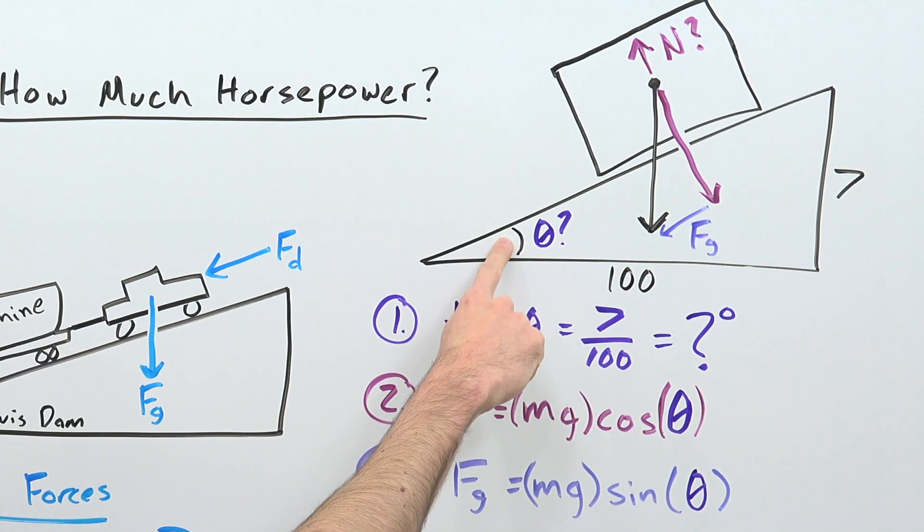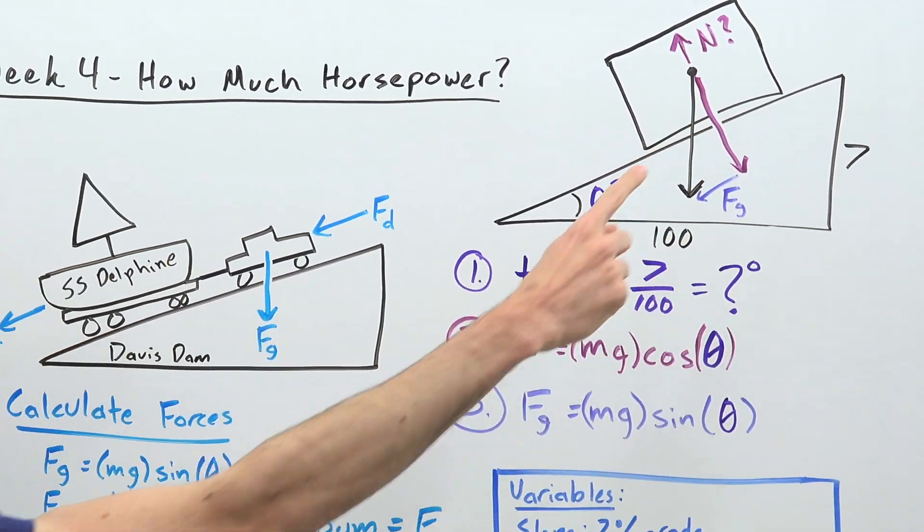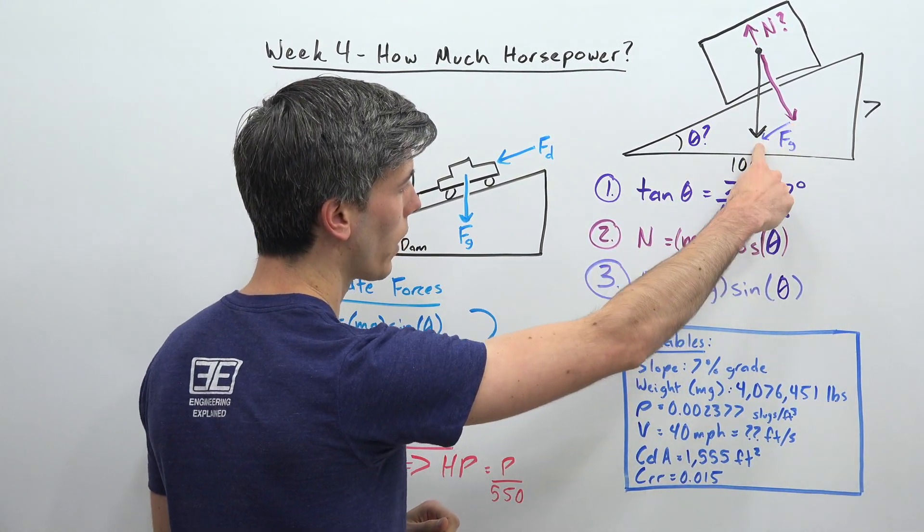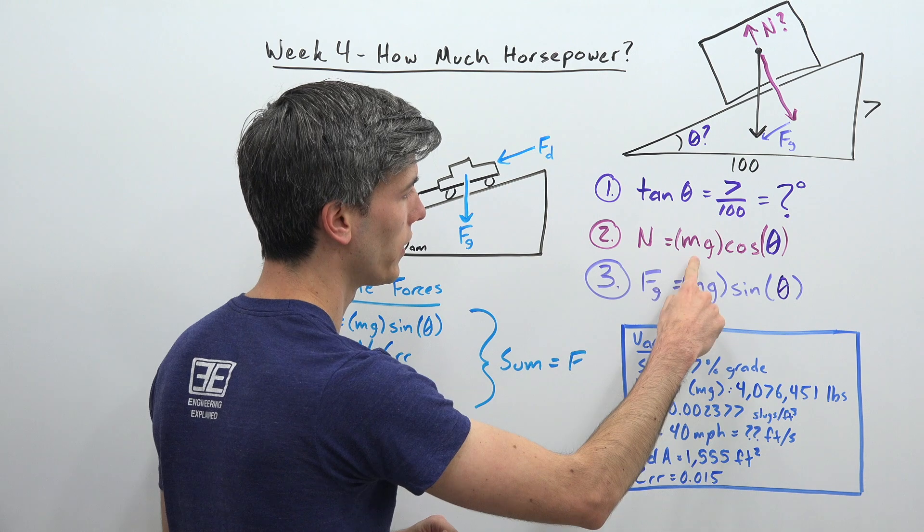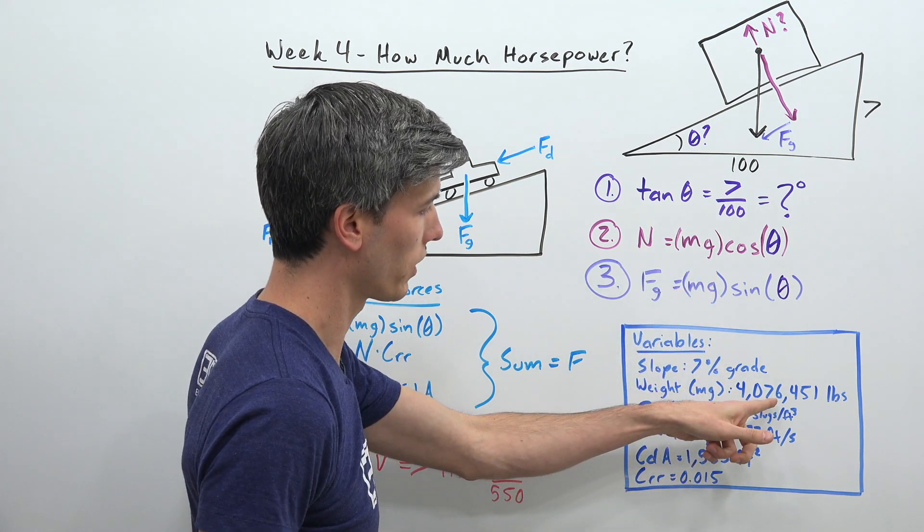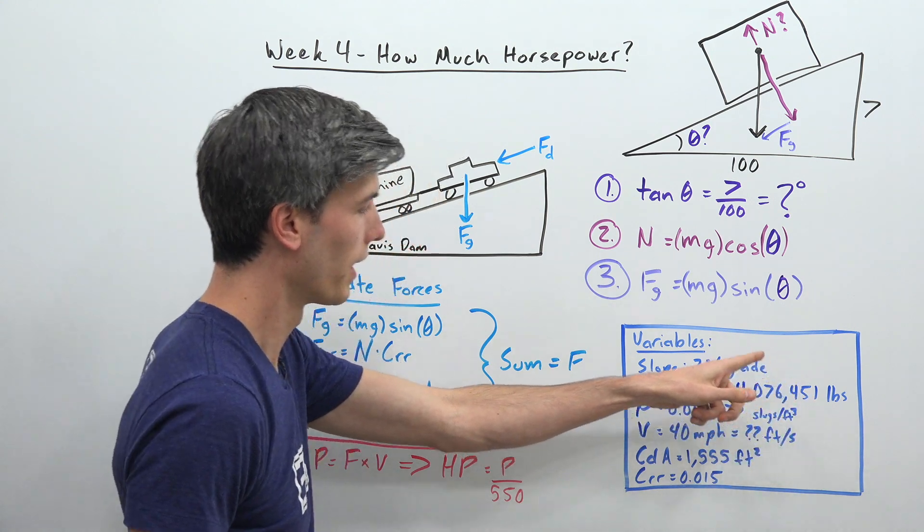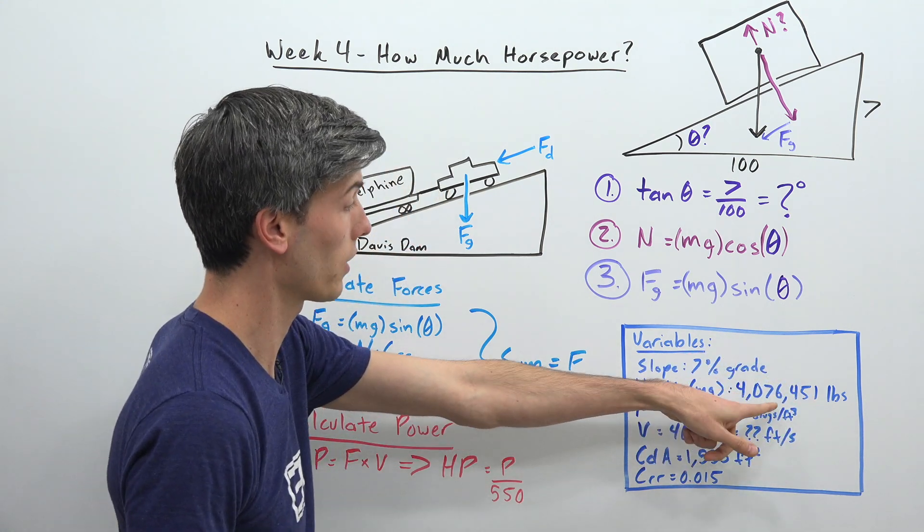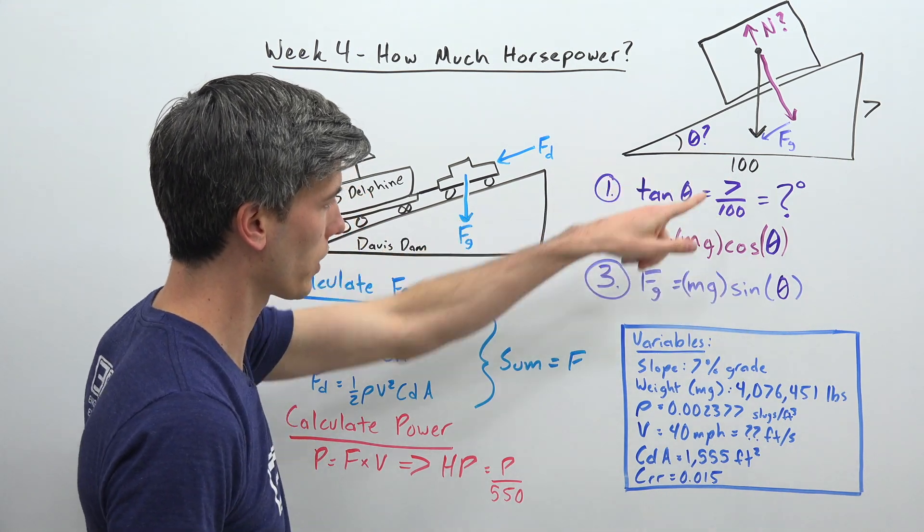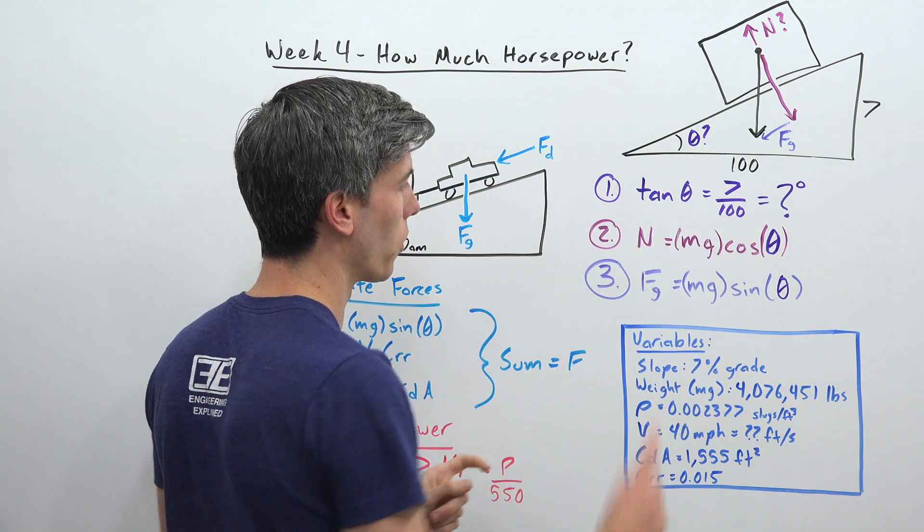Now with this angle there are two things we want to calculate: the normal force in order to calculate the force of rolling resistance and then also the force of gravity. So your normal force is equal to the weight of the system, which in this case is 4,076,451 pounds. That's the weight of the car plus the boat plus the trailer and you're multiplying that by cosine of theta which we just calculated, that will give you your normal force.